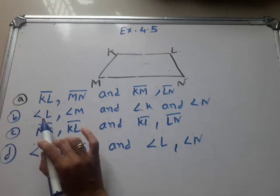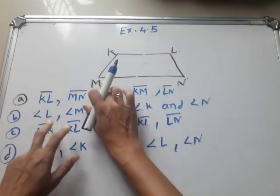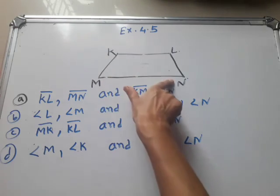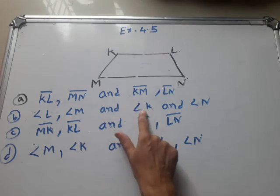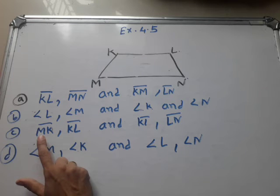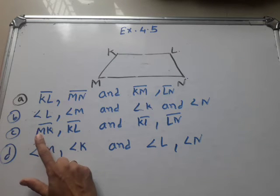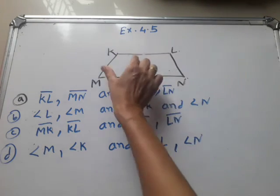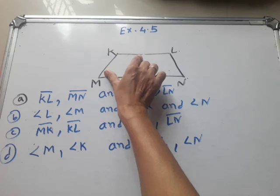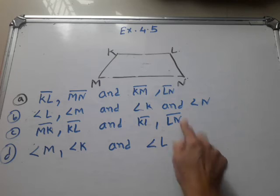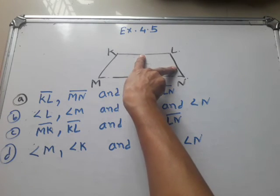Opposite angles: angle L and angle N — these are two opposite angles. Then angle K and angle M — these are two opposite angles. For adjacent sides: MK and KL — these two sides are adjacent to each other. Then KL and LN — these two sides are adjacent to each other.